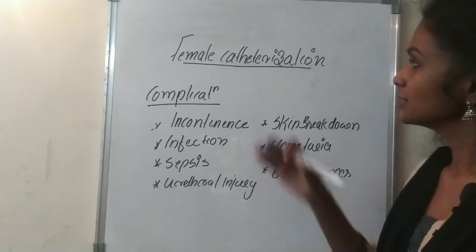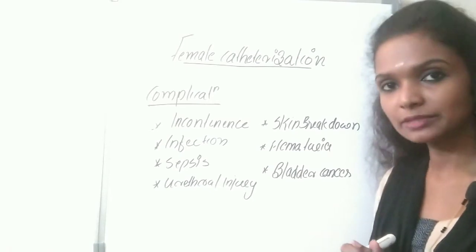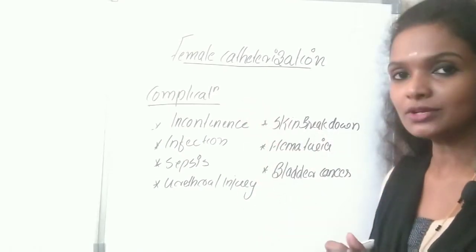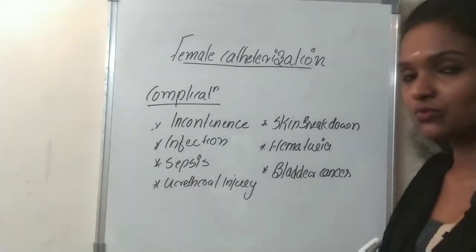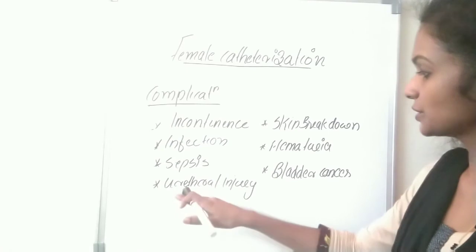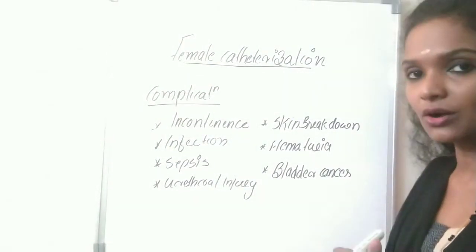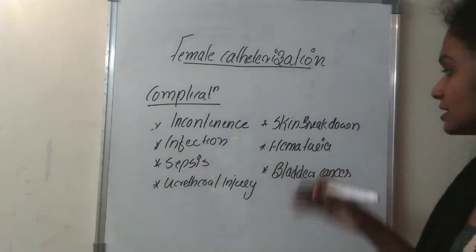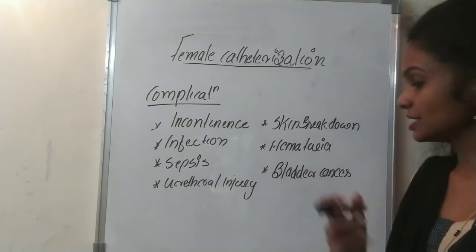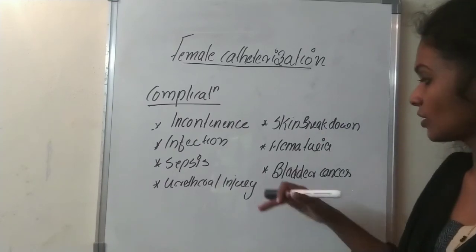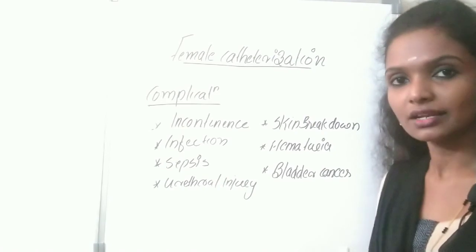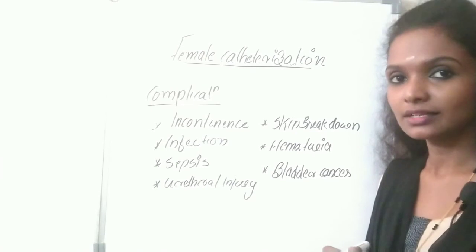Certain complications can occur with urinary catheterization if it is not done in a sterile and hygienic manner or if catheter care is neglected. Complications include: incontinence of urine (involuntary passage), infection due to entry of microorganisms, sepsis due to continuous infection, urethral injury due to friction from inserting the catheter, skin breakdown, hematuria (blood in urine), and bladder cancer from continuous catheterization leading to chronic infection or inflammation. Therefore, catheterization must be done hygienically and sterile catheter care with regular checkups is necessary.